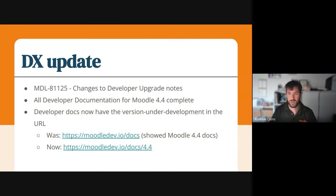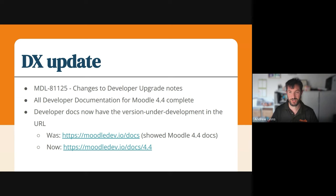I have an issue which I would deeply love feedback on — that's MDL 81125. It's looking at changing the way that we do upgrade notes. For those who aren't aware on the developer side, we use around 127 text files dotted around Moodle to note any API changes. We're looking at changes to that workflow to move it to a CLI tool, which would allow them to be moved into developer documentation more easily.